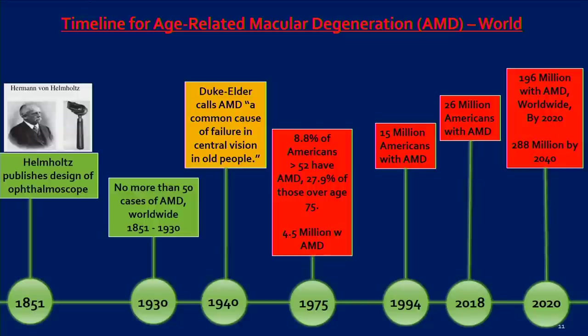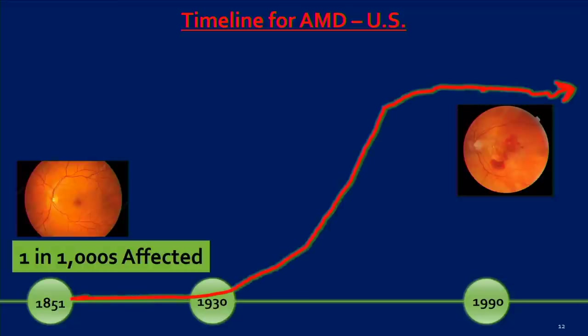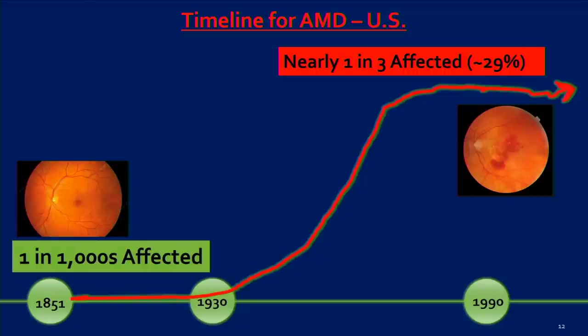Macular degeneration is my area of expertise. Herman von Helmholtz introduced the ophthalmoscope in 1851, allowing ophthalmologists to see the retina. In the next 80 years, there were no more than around 50 cases in all the world's literature. By 1940, Duke Elder called it a common cause of failure in central vision in old people. By 1975, 8.8% of Americans over age 52 had AMD — 4.5 million people. Today, around 26 million Americans, and 196 million worldwide, have macular degeneration.